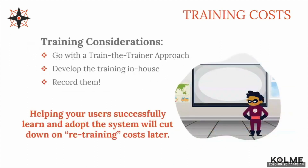Finally, there's one more category of hidden costs: training costs. When you get your new PPM tool ready to go, you're going to have to train your team members. The best approach is usually a train-the-trainer model — have your partner train your trainers so you can carry that training forward to your team. If your team is highly engaged in the implementation, they can develop the training themselves with a little help from your provider, which can save some cost. We also recommend recording your trainings to make it simpler to support onboardings in the future. Having a strong training plan will cut down on retraining costs later and help drive your adoption.